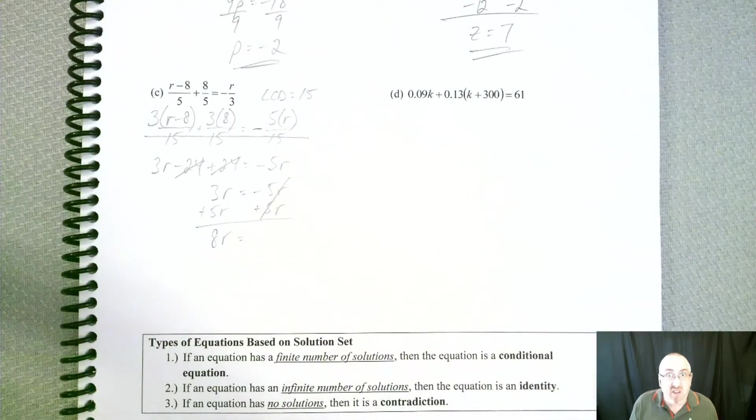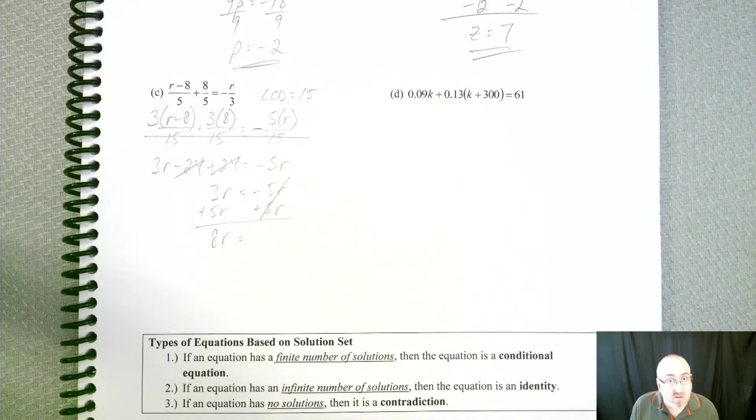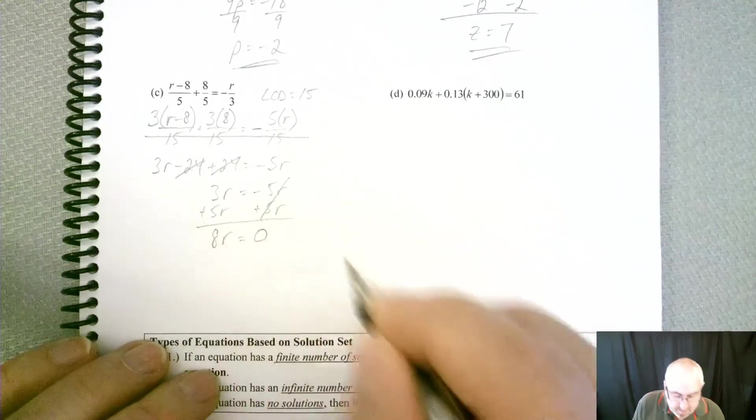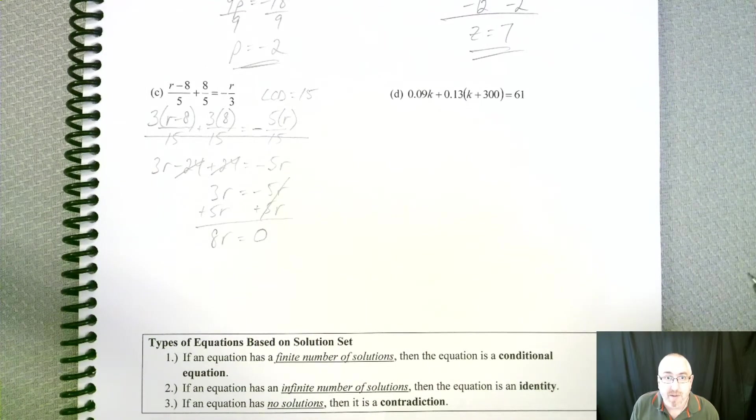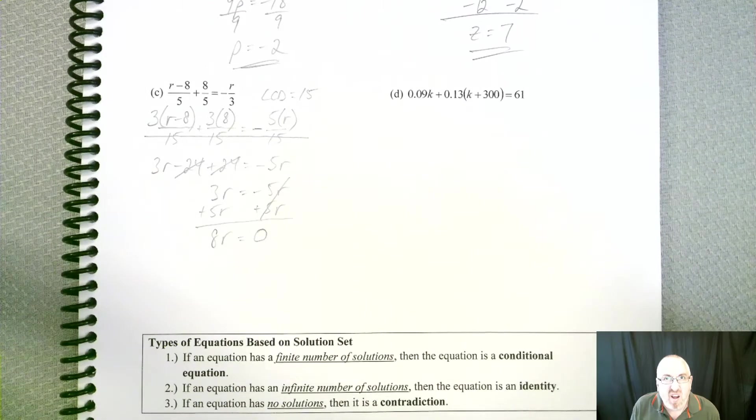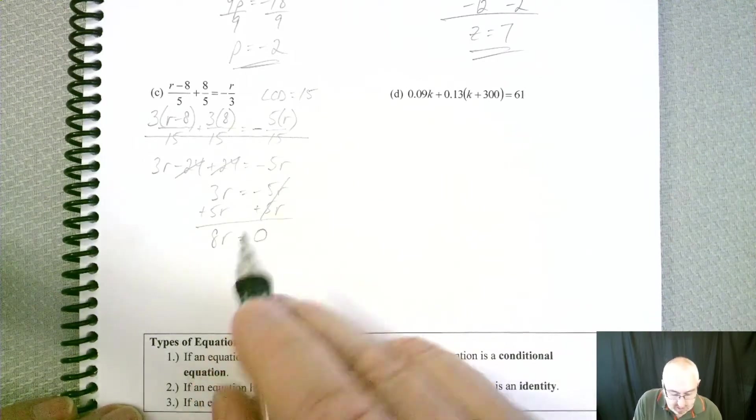Well, if everything's gone, if everything cancels, all that's left is zero. So zero is all by itself on the right-hand side. So now what? Well, now we still divide. We still get rid of that 8. So we have to divide by 8.